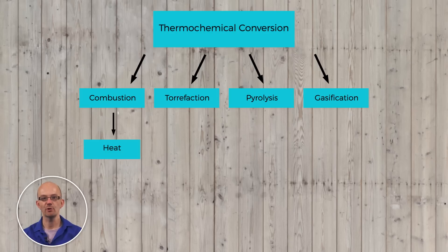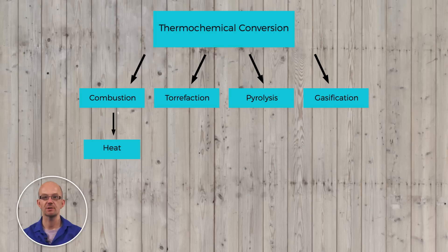A rather new thermochemical process is torrefaction. Torrefaction is carried out under atmospheric pressure and in the absence of oxygen at temperatures ranging between 200 and 300 degrees Celsius. Torrefaction leads mainly to char and gases — liquids are not formed.